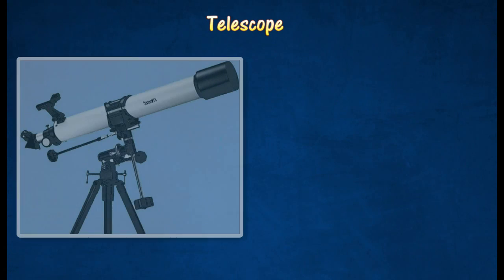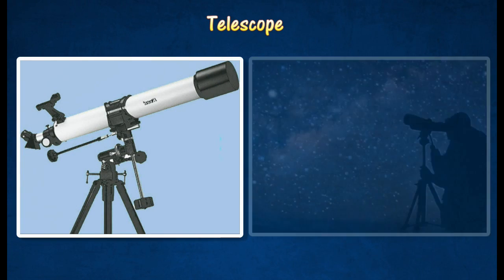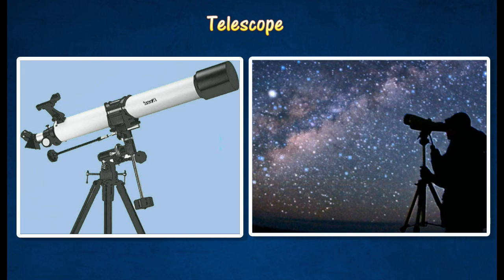An astronomical telescope is an optical instrument that is used to view objects at a great distance, such as planets and stars.